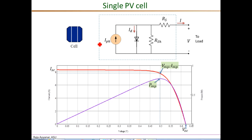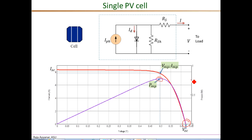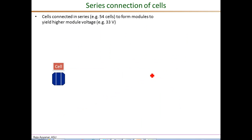A model of a single PV cell is shown here. This is a single diode-based model, consisting of the photon current, the forward bias diode, and the shunt and series resistances. The bottom plot shows the current-voltage curve and the power-voltage curve. The open circuit voltage for a single cell is around 0.62 volts, and the maximum power is slightly above 3 watts.